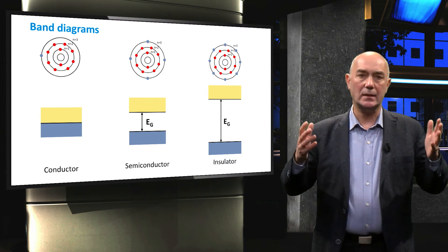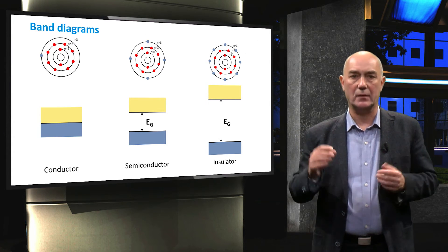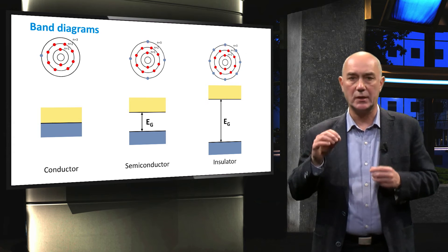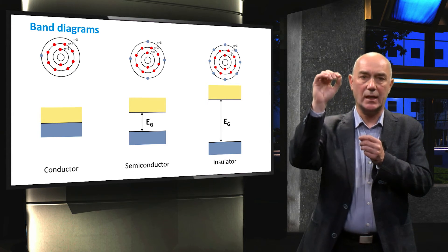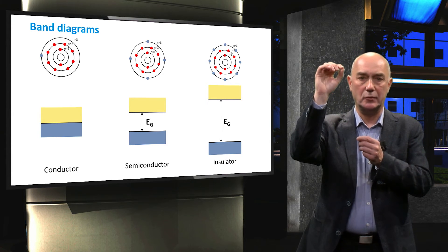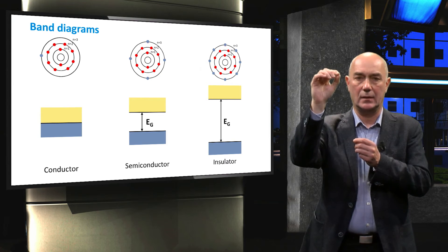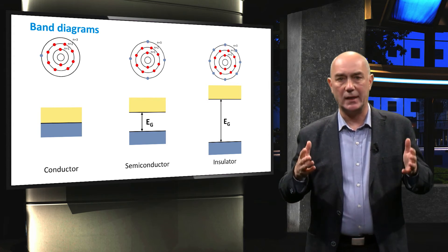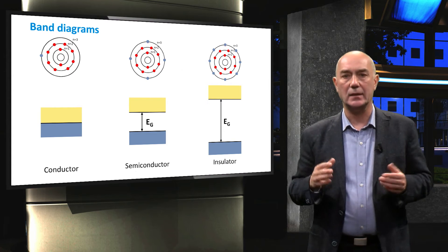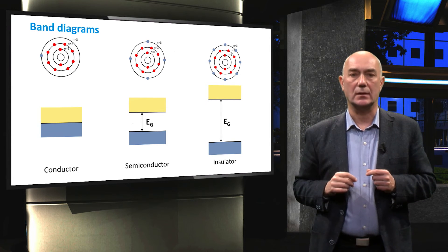Semiconductors have band gap energies that are small enough for photons to excite valence electrons to the energy levels of the conduction band. This is the first step to convert energy of light directly into electricity.